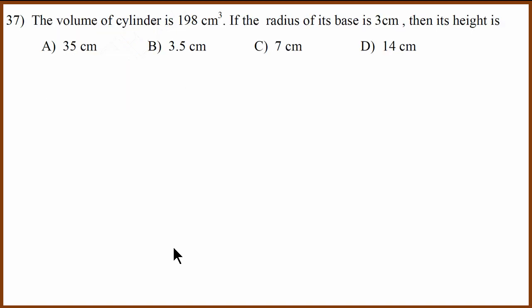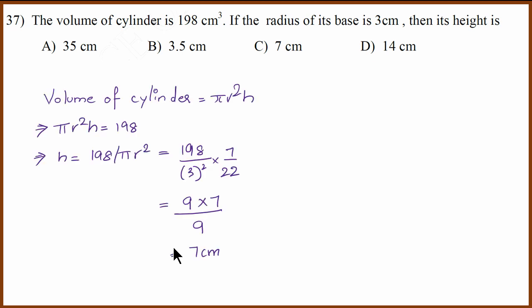Here we've been given a volume of a cylinder. Its radius is 3 centimeter. So volume is pi r square h. Now we've been given that pi r square h is 198 or h equals 198 by pi r square, 198 by r square. In this case r is 3 centimeters. So that will be 3 square multiplied by 7 by 22. Why 7 by 22? Because pi is in the denominator. So this is 22 times 9 is 198. 9 by 9 is 1 which means this is 7 centimeter. So correct answer is C.